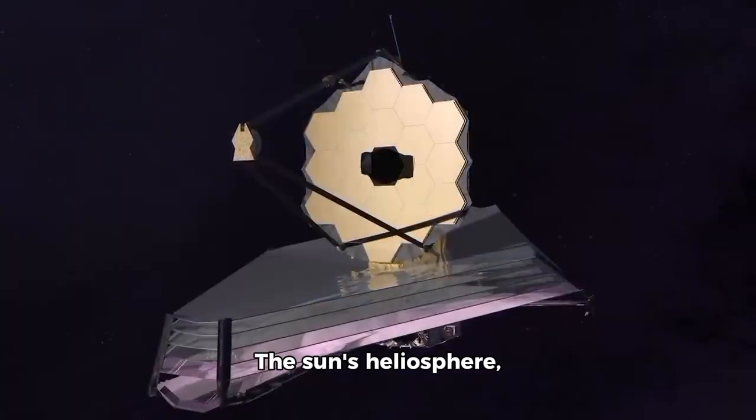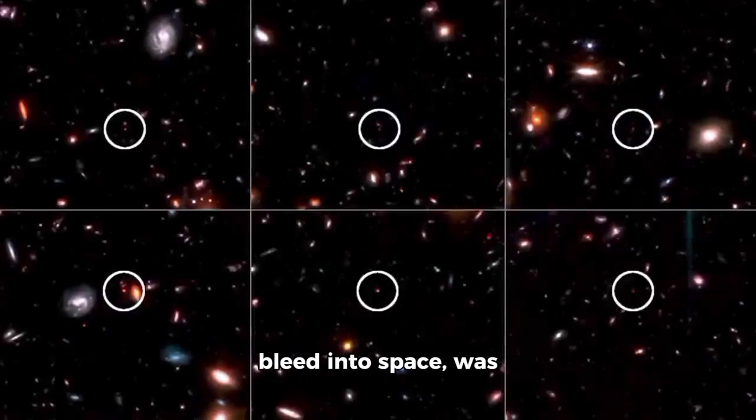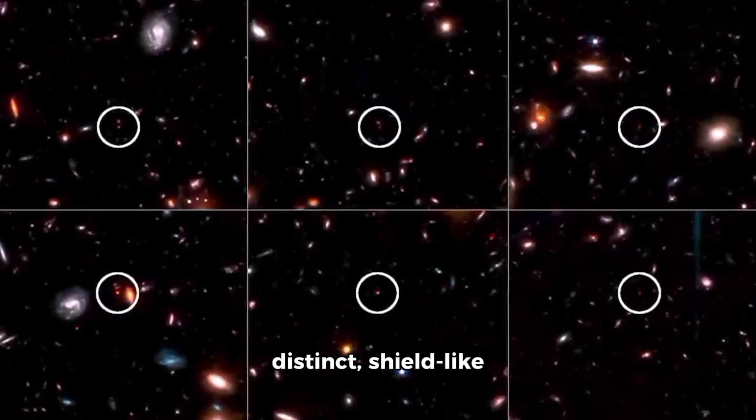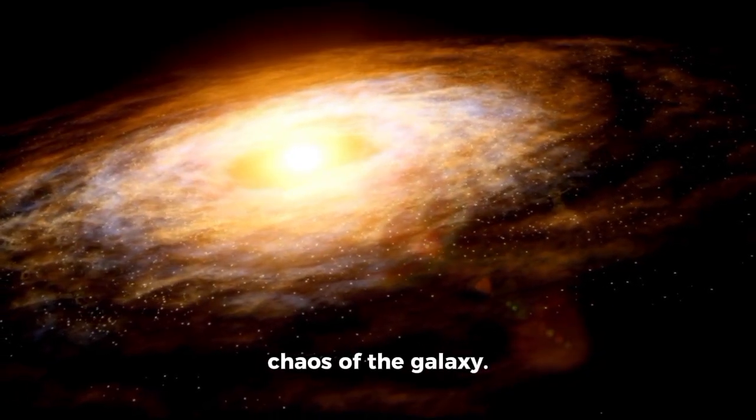What stunned researchers most wasn't just the presence of a boundary, but the precision of it. The sun's heliosphere, once thought to gently bleed into space, was now revealed as a distinct, shield-like structure, one that had been holding back the chaos of the galaxy.